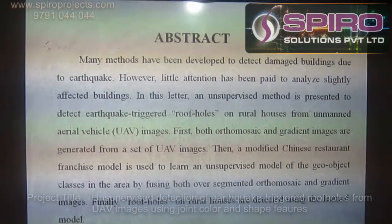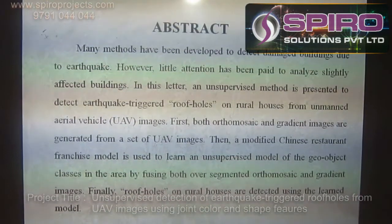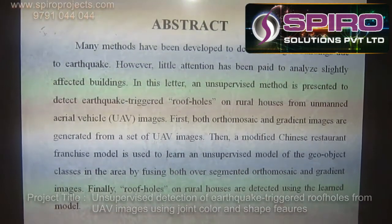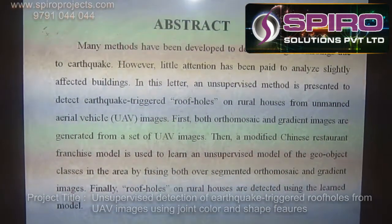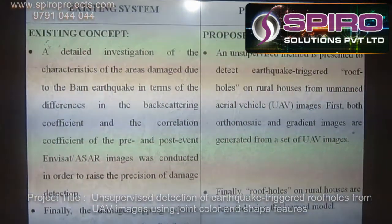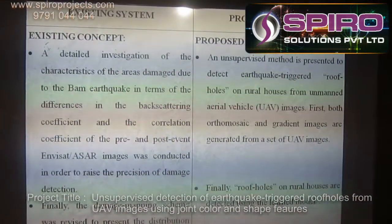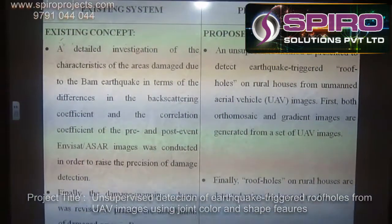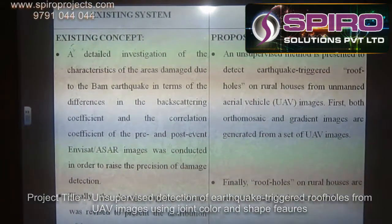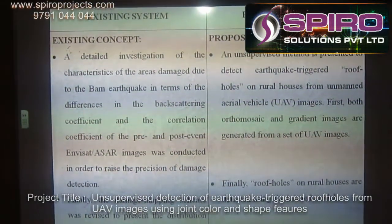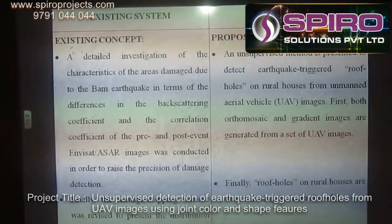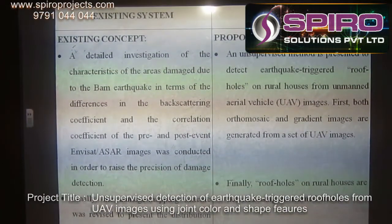In this project, the roof holes of a rural house are detected using unmanned aerial vehicle images. In the existing method, a detailed investigation of the characteristics of the area's damage due to the BAM earthquake was conducted in terms of the difference in the backscattering coefficient and the correlation coefficient of the pre- and post-event images, in order to raise the precision of damage detection.